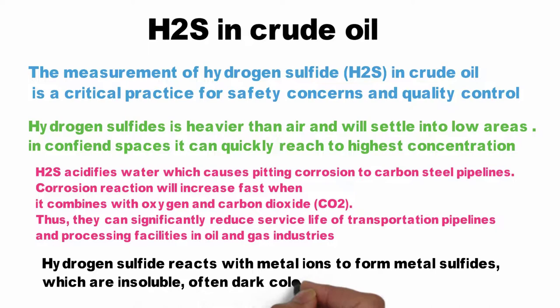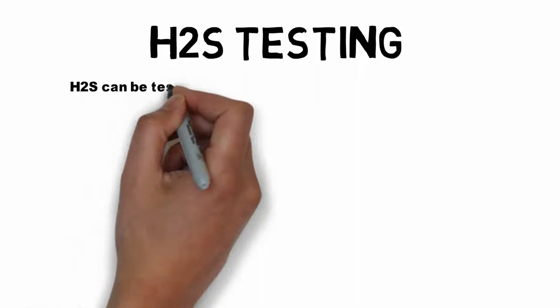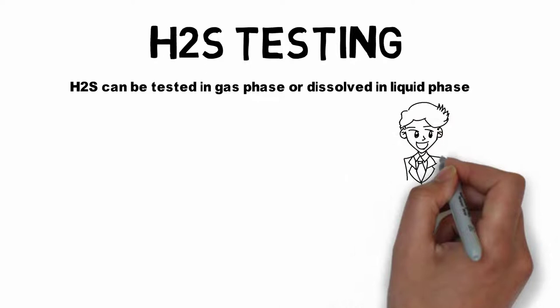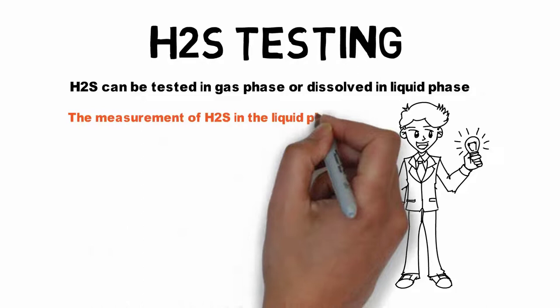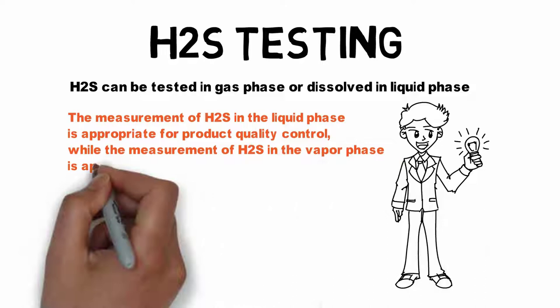H2S can be tested in a gas phase or dissolved in a liquid phase. The measurement of H2S in the liquid phase is appropriate for product quality control, while the measurement of H2S in the vapor phase is appropriate for health and safety concerns. There are different methods to analyze H2S in both the gas phase and the liquid phase.